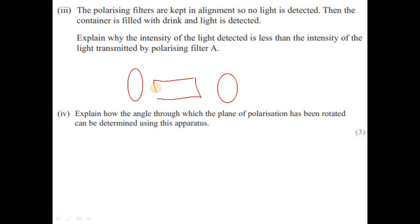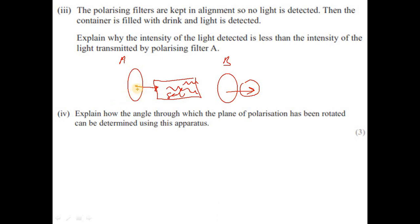When polarized light from filter A passes through the solution, some components of the polarized light are rotated. These rotated components can then pass through filter B, so we detect light on the other side. However, the intensity is less than what comes out of filter A because only some — not all — components of the light are rotated.